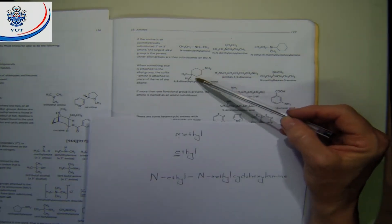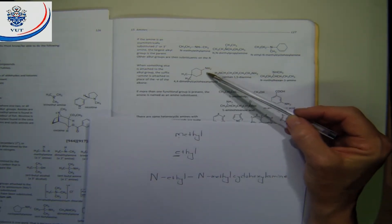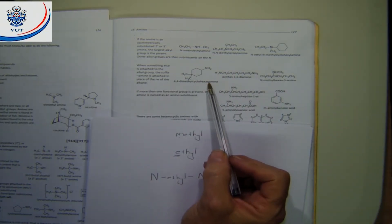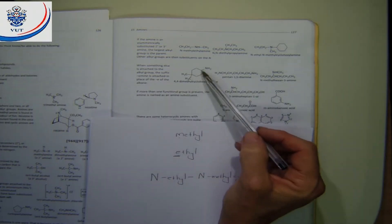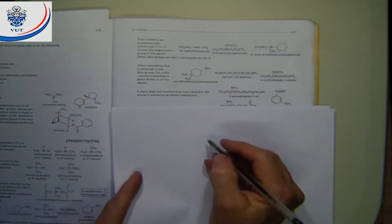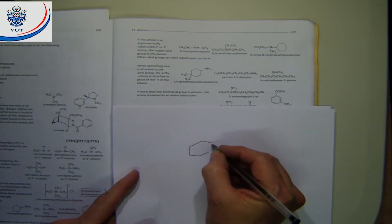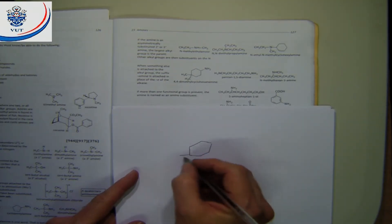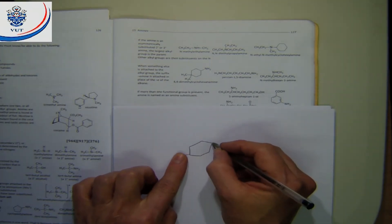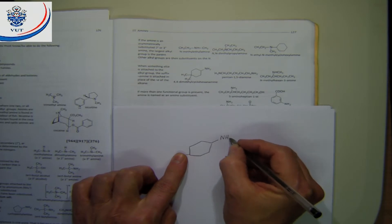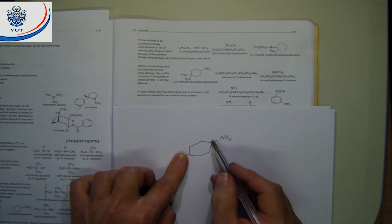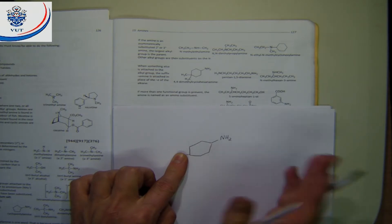When you have something else attached to the ring and you are naming the amine using IUPAC style, instead of the ending -e that you would have for cyclohexane, you put the word amine. So for a cyclohexane ring with an NH₂ and no other substituents, we would say cyclohexanamine.